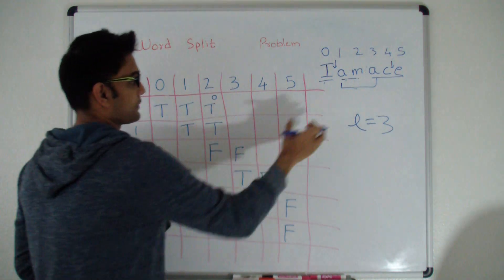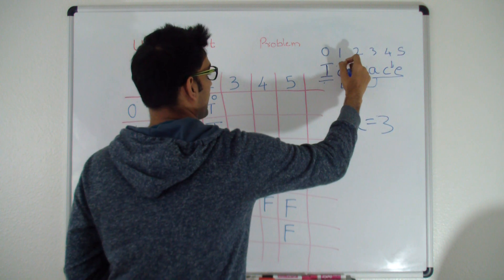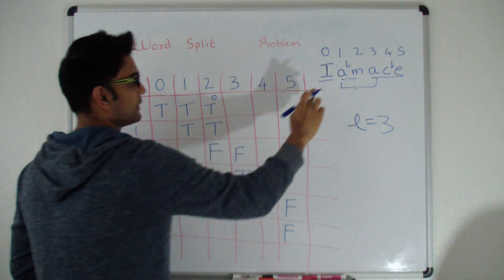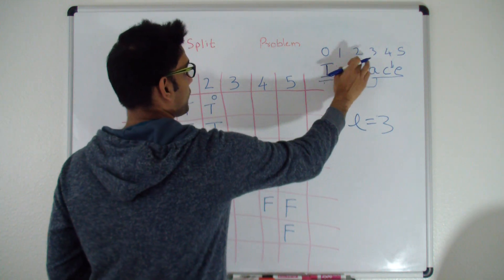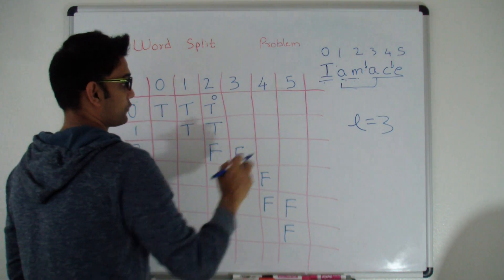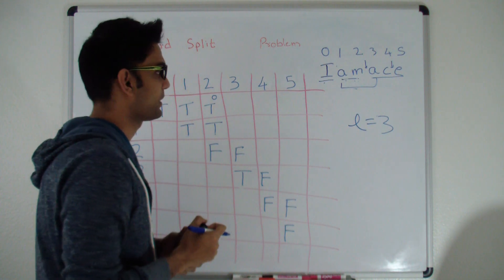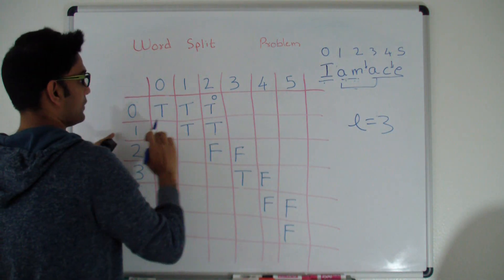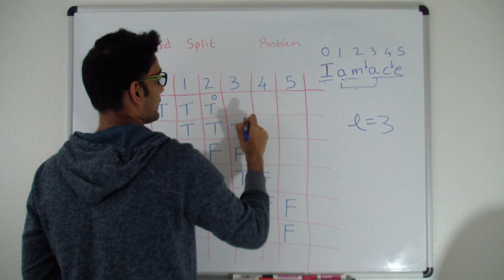For 'AMA': does AMA belong in the dictionary? No. We try splitting after A: (1,1) is true but 'MA' at (2,3) is false, so that doesn't work. We try splitting after 'AM': (1,2) is true and A at (3,3) is also true. So AMA can be split into valid words — (1,3) is true. We indicate the split point is at index 2.